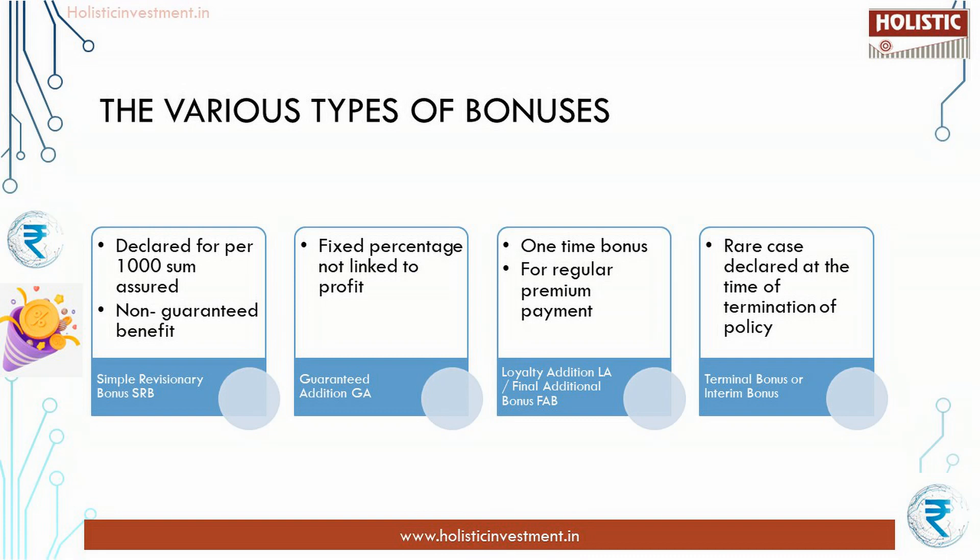The second type is Guaranteed Addition, or GA. As the name implies, it is guaranteed — that is, a fixed amount which is added each year based on the type of policy. The profit declaration has nothing to do with GA. A fixed bonus is paid irrespective of the profit declaration.